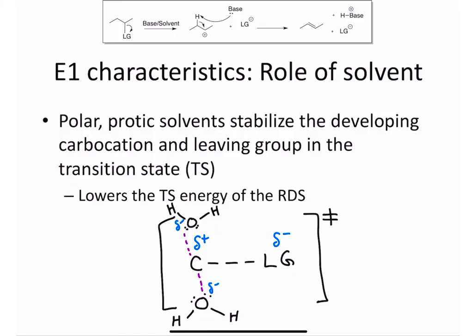This can happen multiple times. The same thing happens with leaving groups, but this time, the delta negative on the leaving group attracts the positive, delta positive, of the proton in the solvent. Forming these hydrogen bonds helps to stabilize the leaving group as it leaves. The stabilization of this transition state lowers the transition state energy, which helps make the reaction go faster.